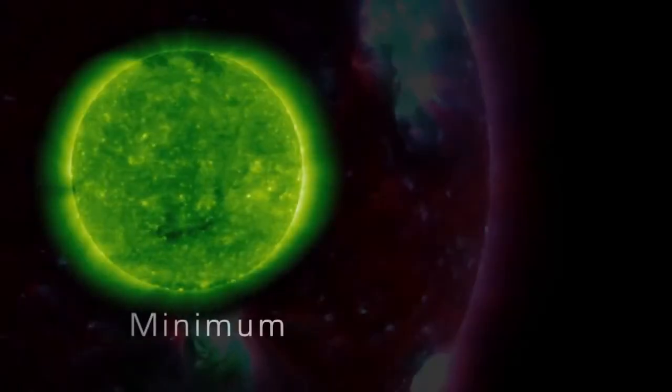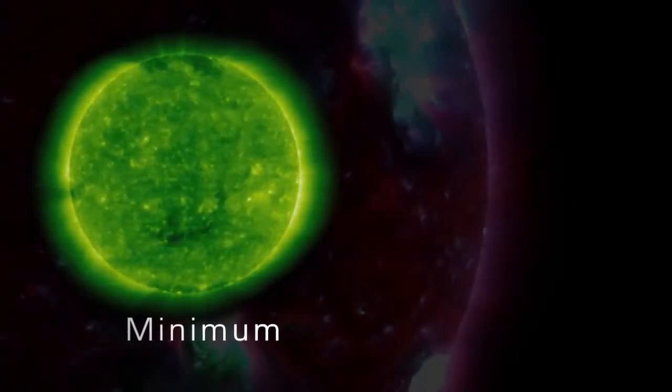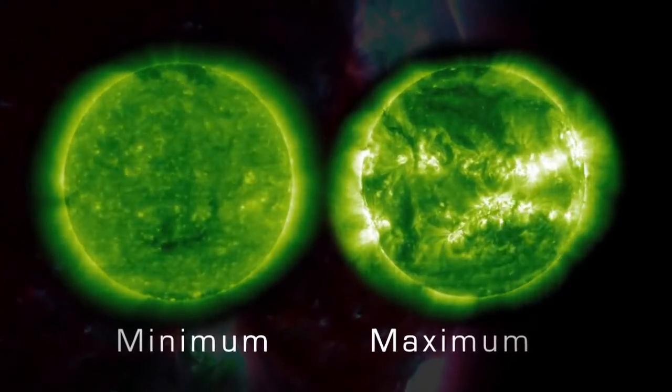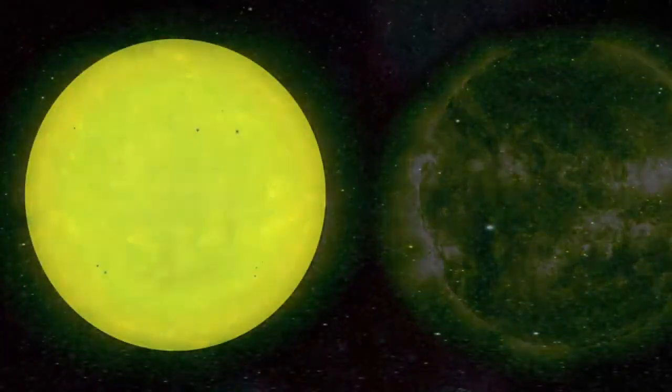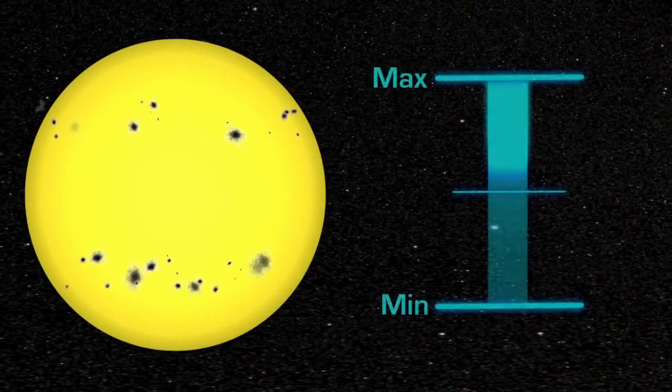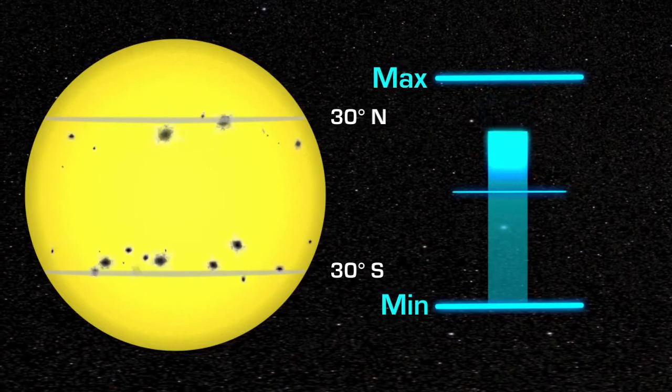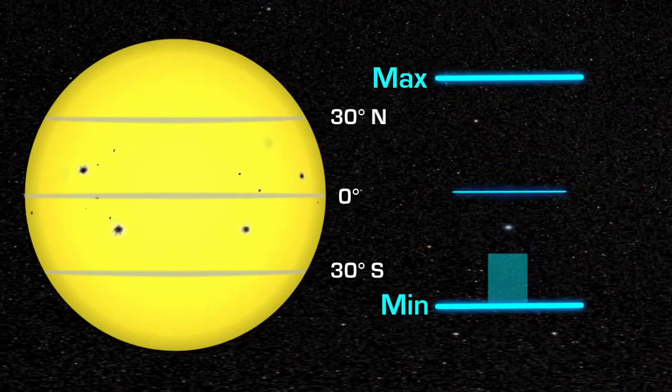Solar minimum represents a period of time when sunspot numbers are relatively low, and solar maximum represents a period when sunspot numbers are relatively high. During this cycle, the location of the sunspots also changes. They are at middle latitudes during solar maximum and move closer to the equator as the Sun approaches solar minimum.